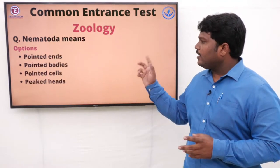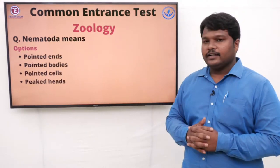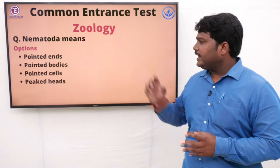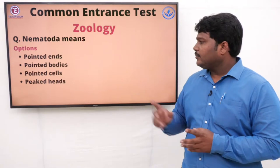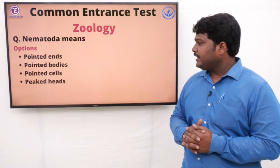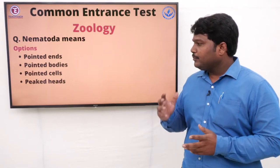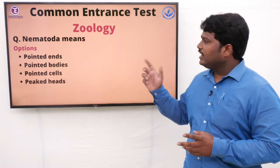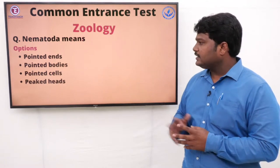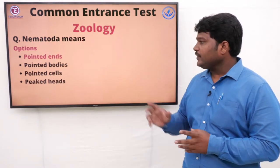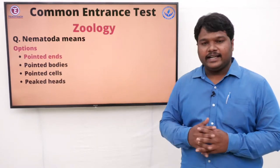Question 38: Nematoda means. Options: A) Pointed ends, B) Pointed bodies, C) Pointed cells, D) Peaked heads. The right answer is pointed ends. Nematodes will be having pointed ends.